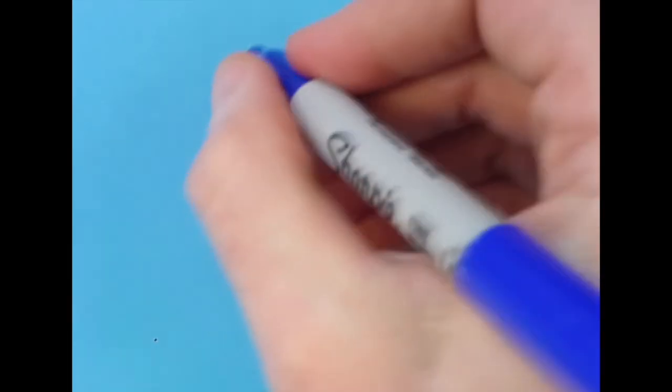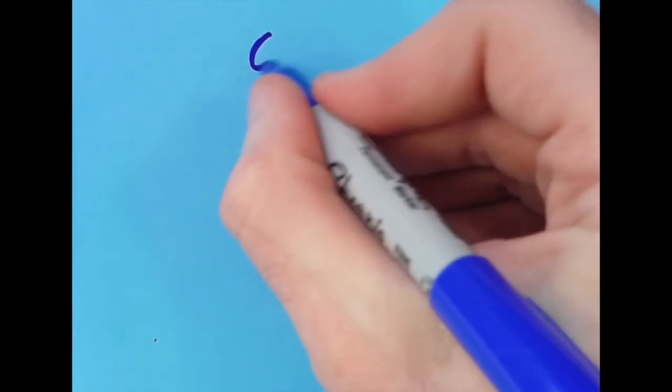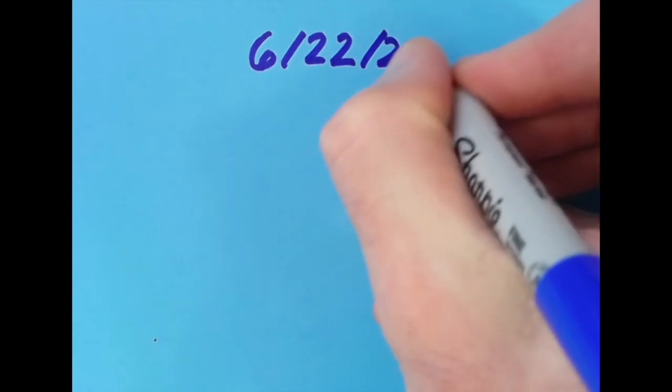Now tomorrow is going to be June 22nd so we can write tomorrow's date as 6-22-22. So we have lots of twos here for tomorrow. So go ahead and see if you can come up with an equation for the digits in this date. I'm going to do the same thing and post a new video tomorrow.